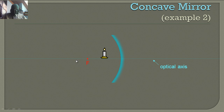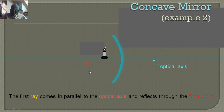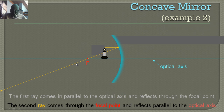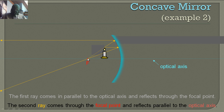However, if we put the candle inside the focal point, some different stuff happens. The first ray still comes in parallel and reflects back to the focal point. The second ray: even though it's hitting the mirror, if we extend this line backwards like a sight line, it's going to go through the focal point.